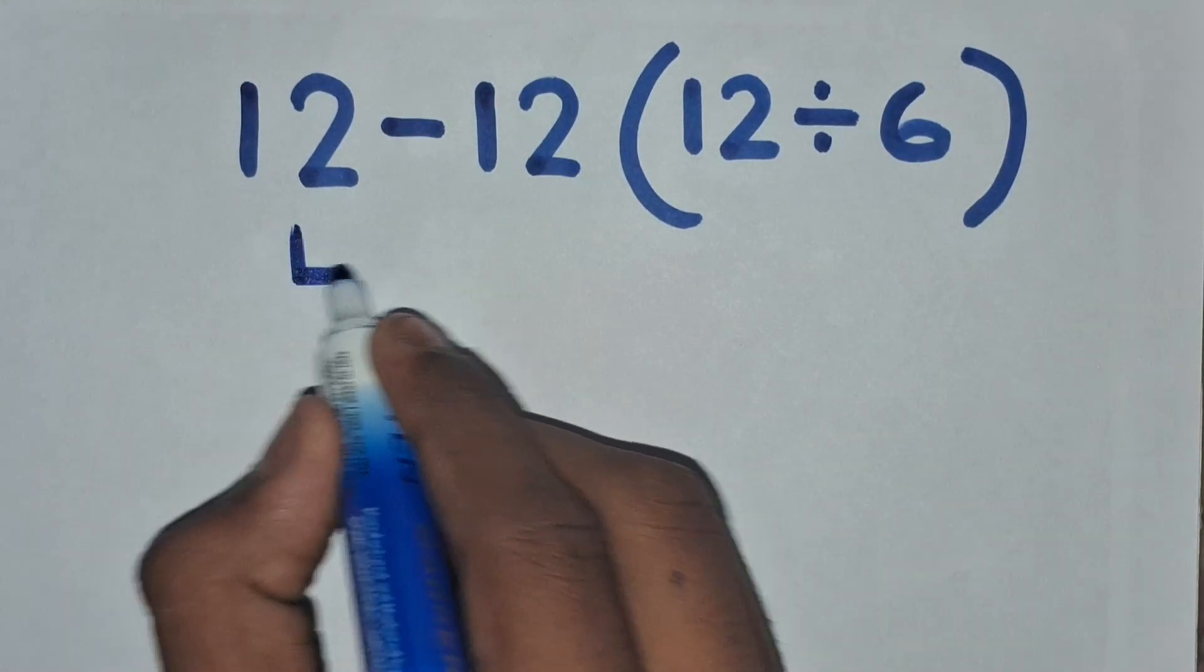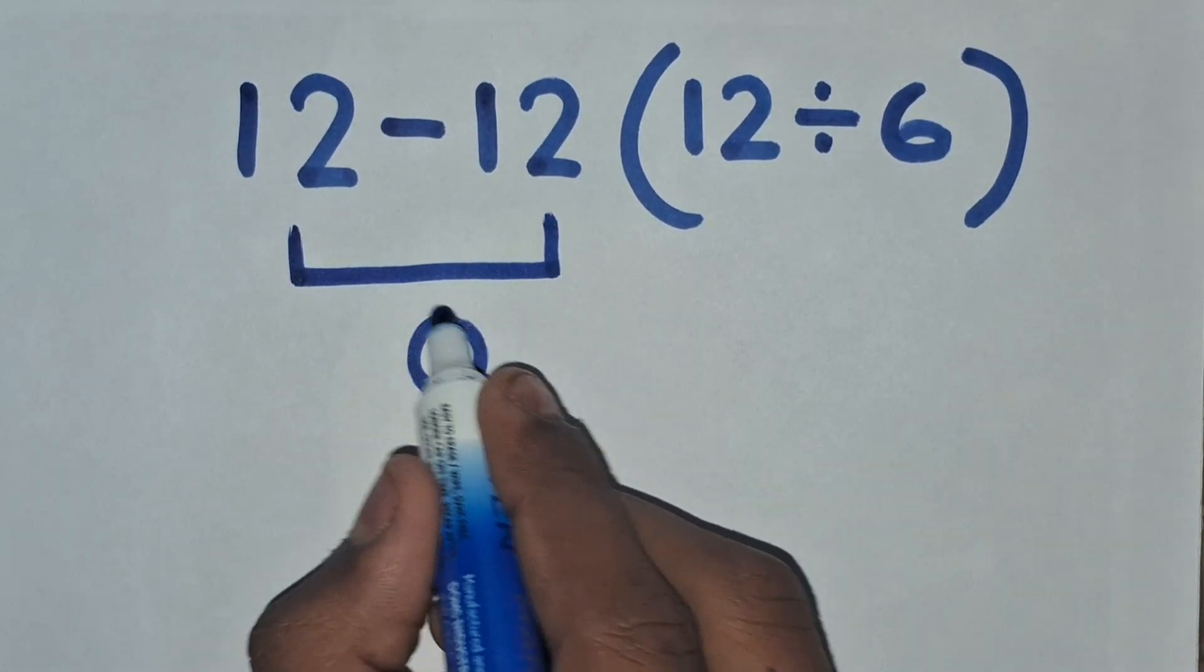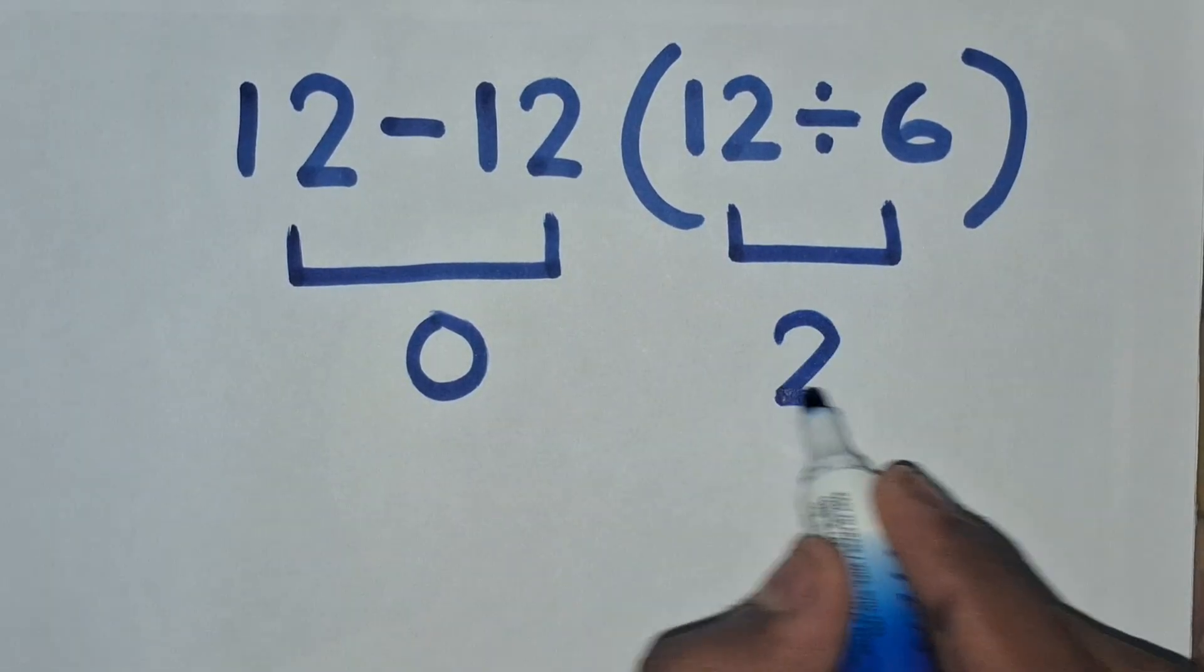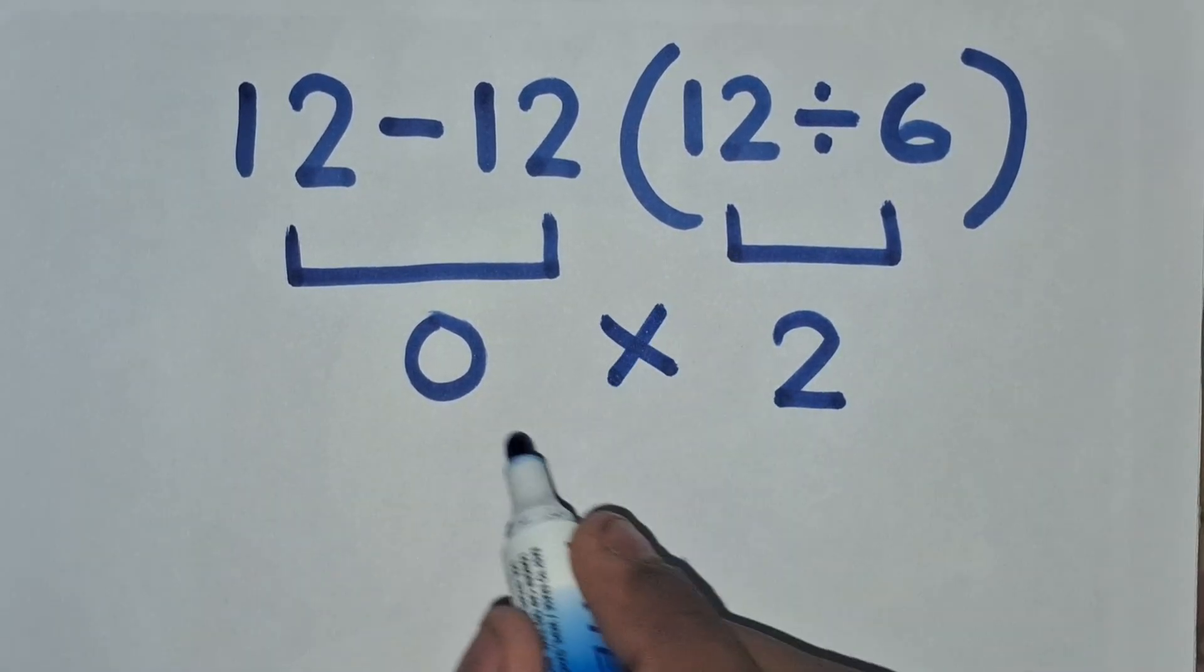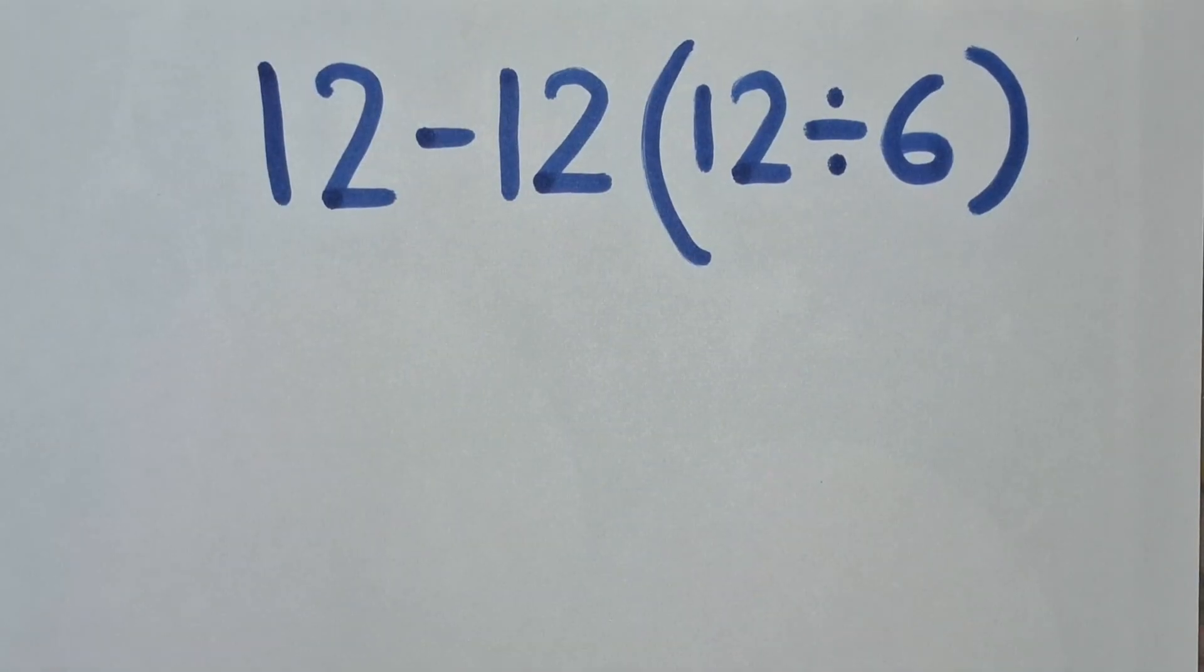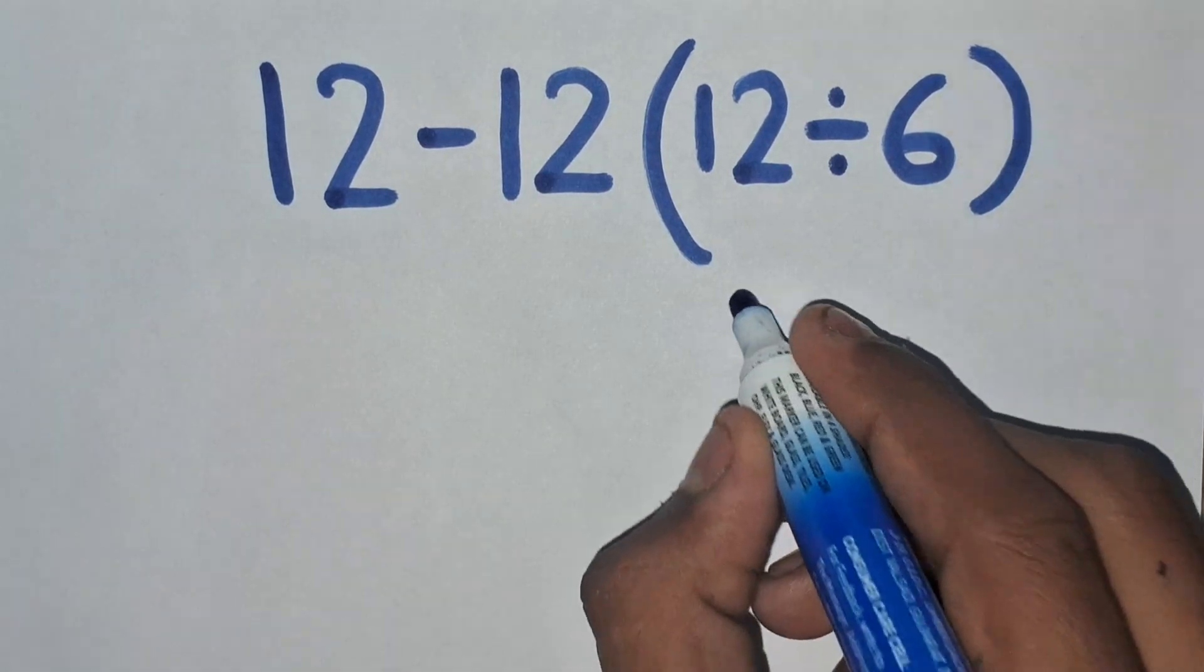12 minus 12 equals 0, and 12 divided by 6 equals 2, so 0 times 2 equals 0. But 0 is not the correct answer for the expression according to the order of operations.